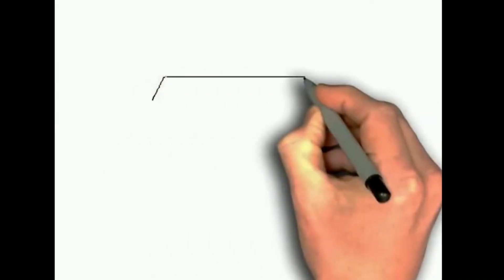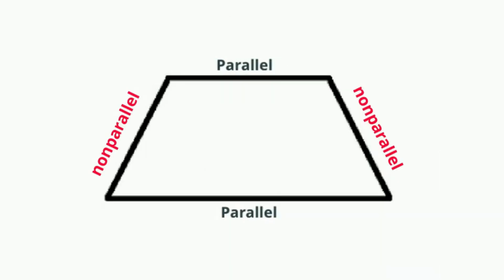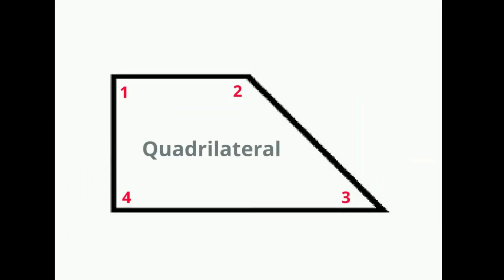A trapezoid is a quadrilateral with one pair of parallel sides and one pair of non-parallel sides. A trapezoid has four sides, which makes it a quadrilateral. A trapezoid only has one pair of parallel sides, so it is not considered a parallelogram.